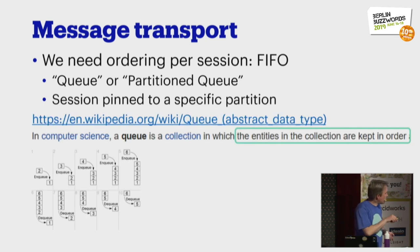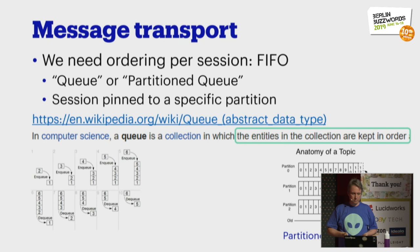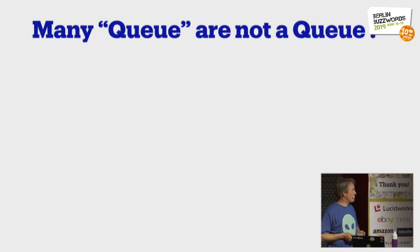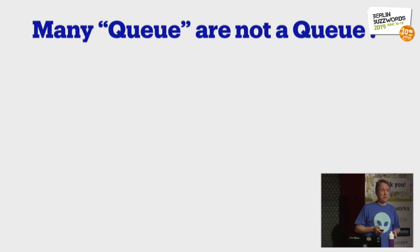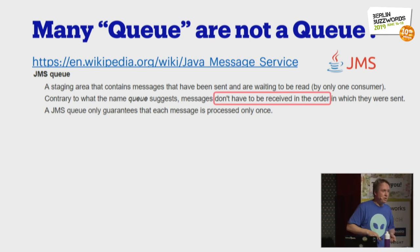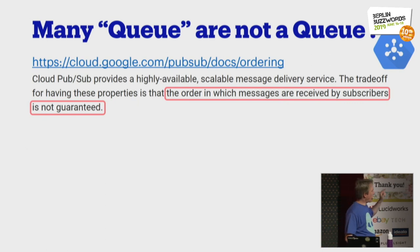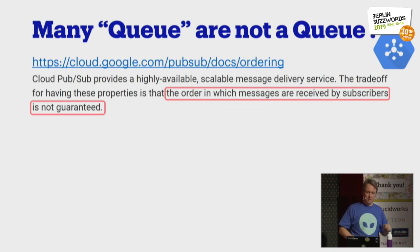Wikipedia defines a queue quite nicely: entities are kept in order. What I call a partition queue is essentially a single thing that collects a couple of queues together. The big problem in our IT land is that there are so many systems that call themselves a queue that are not. JMS has a thing called queue which does not maintain order. Active MQ does not maintain order. Google has Pub/Sub — they have an elaborate marketing page explaining that you do not need order, because they can't deliver it.